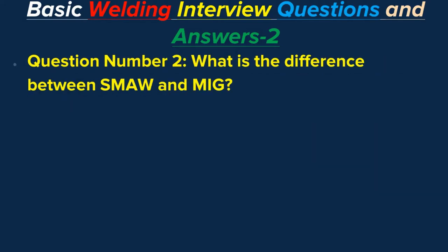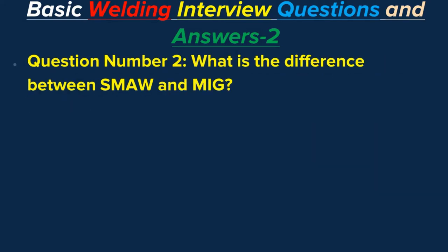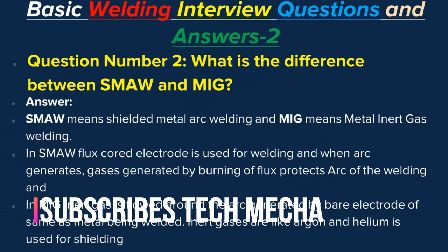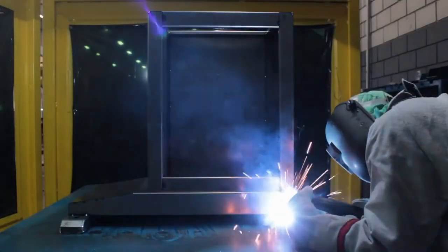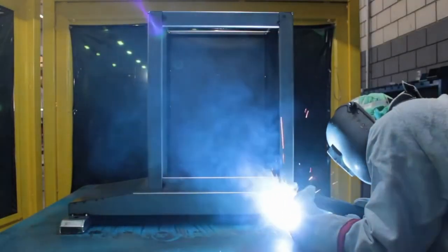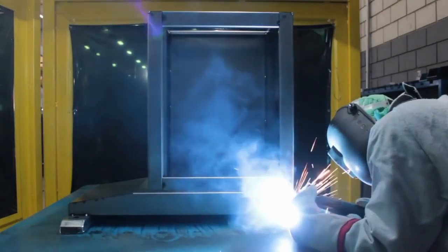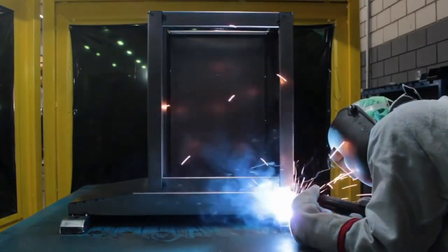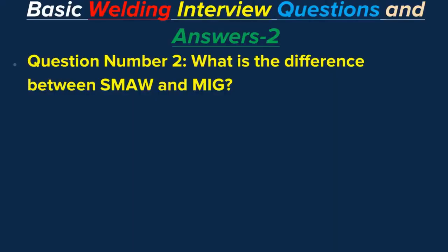Question number two: What is the difference between SMAW and MIG? Answer: SMAW means shielded metal arc welding and MIG means metal inert gas welding. In SMAW, a flux-coated electrode is used and gases generated by burning of flux protect the arc. In MIG, inert gas is blown around the arc generated by a bare electrode of the same metal being welded.